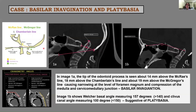Craniometry is very important in assessing CVJ abnormalities. The most commonly used lines are McRae's line from the basion to the opisthion, Chamberlain's line from the posterior edge of the hard palate to the opisthion, and McGregor's line. The angles used are the Welcher basal angle and the clivus canal angle, which assess platybasia. In image 1A, the tip of the odontoid process is 14 mm above McRae's line and 18 mm above Chamberlain's line.